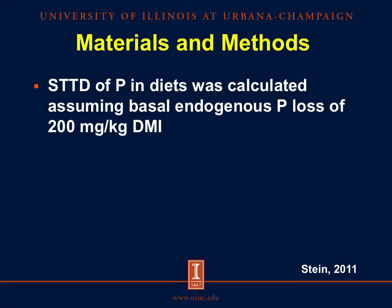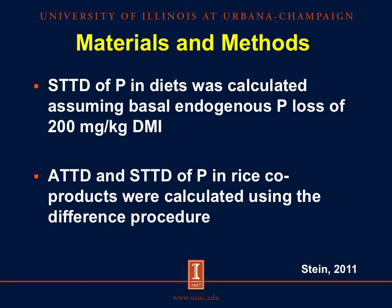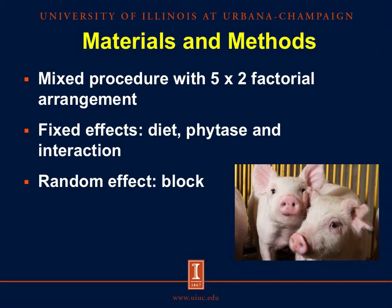ATTD and STTD of diets were calculated using the direct procedure, and STTD was calculated by subtracting endogenous phosphorus loss of 200 mg per kg of dry matter intake. ATTD and STTD of phosphorus in rice coproducts were calculated using the difference procedure. The data were analyzed using the mixed procedure of SAS with a 5 by 2 factorial arrangement, and diet, phytase, and their interaction were the fixed effects, and block was a random effect.